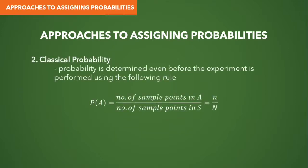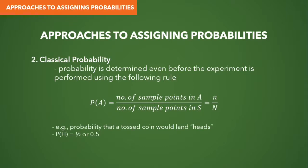The second approach is classical probability. Here, the probability is determined even before the experiment is performed, so we have prior knowledge about the system under study. This forms the theoretical basis for several statistical tests we will learn in later lectures. In classical probability, we solve for probability using the formula: the number of sample points in event A divided by the number of sample points in the sample space S. An example is the coin toss — we know the probability of landing heads is 0.5 even before tossing. The Mendelian principles of heredity are also a type of classical probability, since we can calculate the probability of inheriting a particular feature from a cross before performing the crossing.